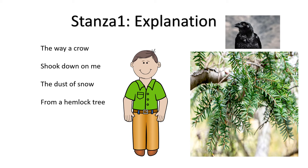The way a crow shook down on me the dust of snow from a hemlock tree. The poet starts the poem by telling the reader how a crow shook down snow on him while he was standing under the hemlock tree. The snowflakes fall on the poet from a hemlock tree when a crow perched on the tree moved, and therefore in the process made the snowflakes fall on him.